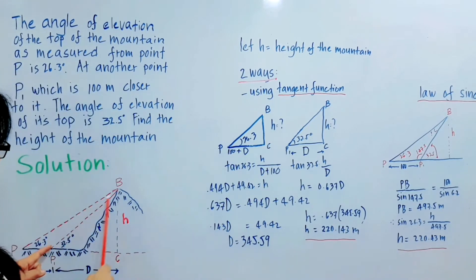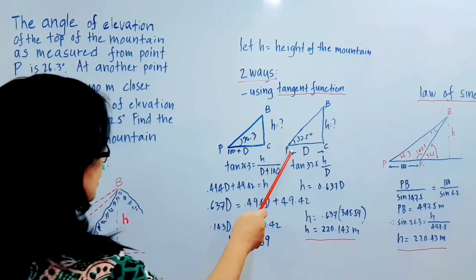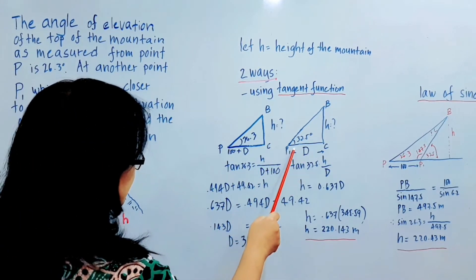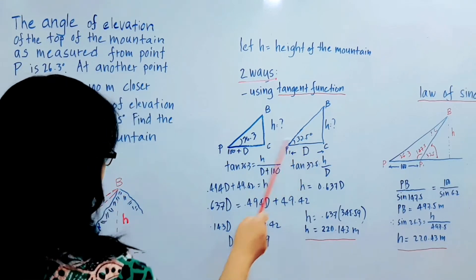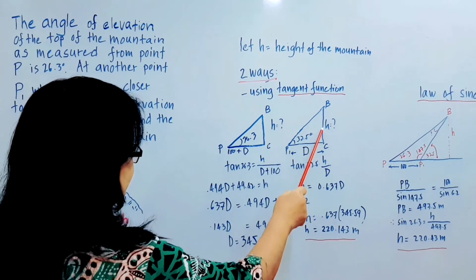In the second right triangle with the 32.5 degrees angle, the distance from P1 to C is D, and the height of the mountain is H.